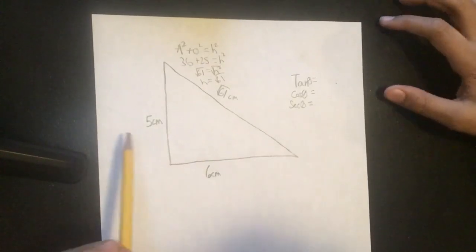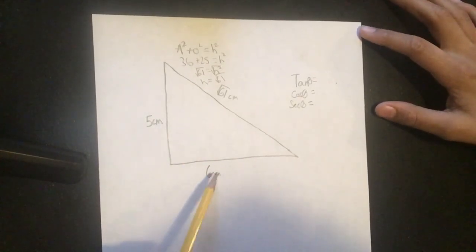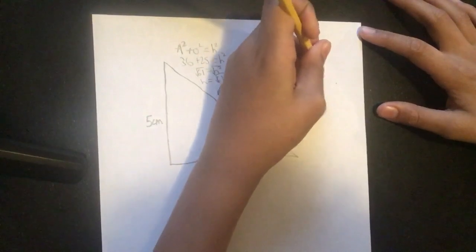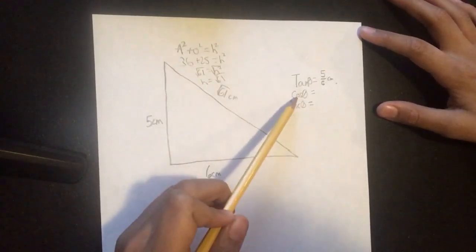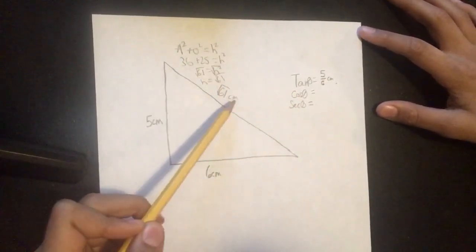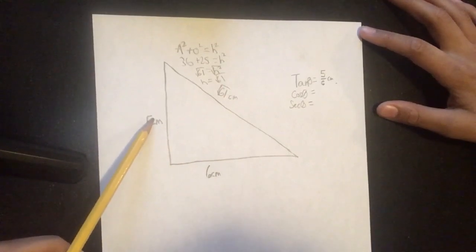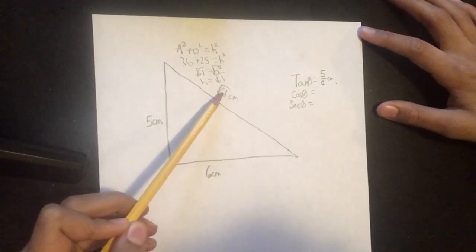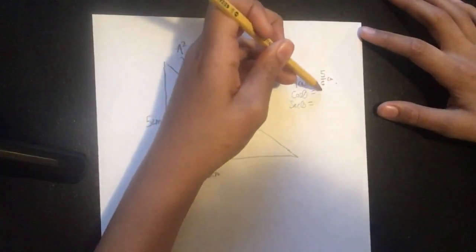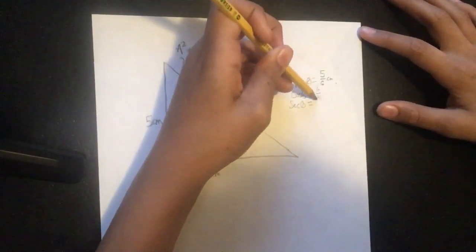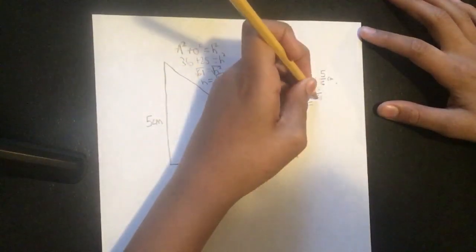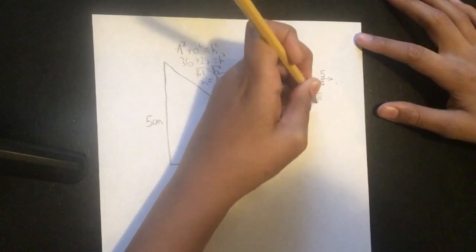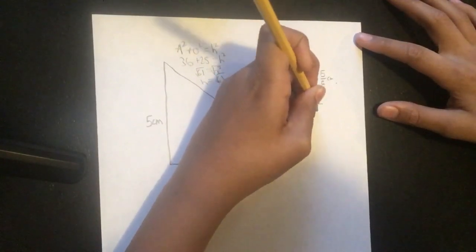The tangent is going to be the opposite divided by the adjacent, which is going to be 5 over 6 centimeters. The cosine is going to be the adjacent over the hypotenuse, which is going to be 6 over the square root of 61. And then the secant is just going to be the inverse of that, which is the square root of 61 over 6.